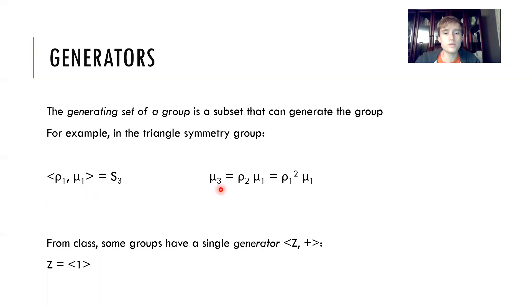We already saw that mu three equals rho two times mu one. That also equals rho one squared times mu one, which is just a decomposition into these two elements.